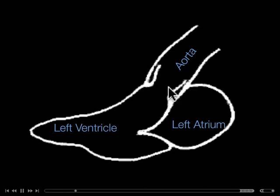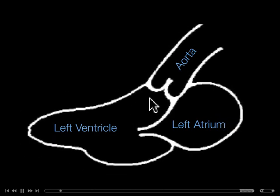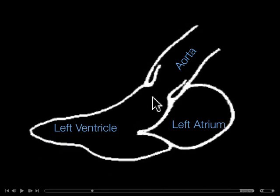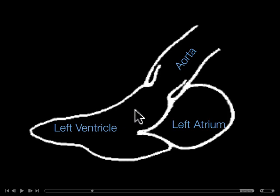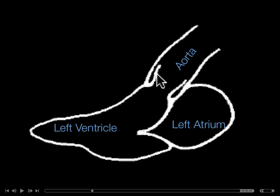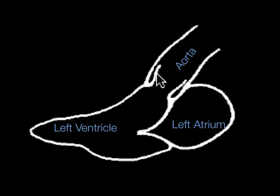This is the left ventricular outflow tract. At end systole we can see the heart is all nicely contracted down with the septum towards the posterior wall, and these valve leaflets fly open. This distance here is called the LVOT, or left ventricular outflow tract, and that becomes a critical measurement when we want to measure cardiac output.